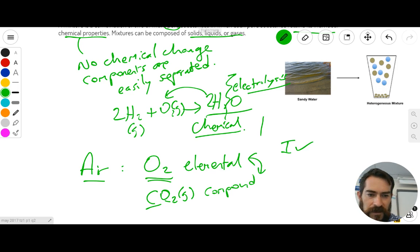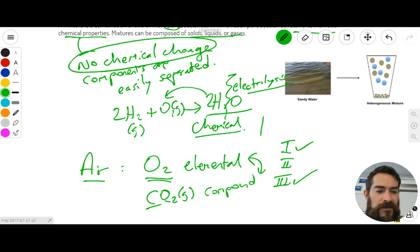So we can tick off the first statement of the Roman numeral options. The second statement we'll come back to in a second. And the third option you have to state whether it's correct or not, it states the components retain their individual properties. And this is of course true because, as we said before, there's no chemical change when you make a mixture. So if you mix oxygen and CO2 and you come back to them in a month's time, you'll still have pure oxygen, you still have your CO2.